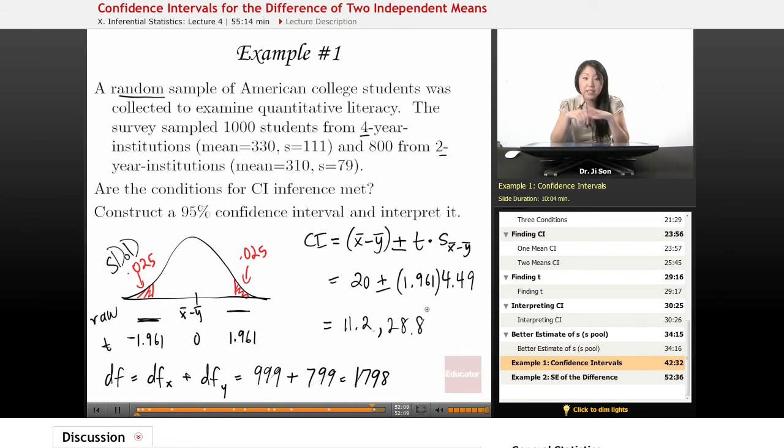And now we have to interpret it. This is the hardest part for a lot of people. We have to say something like this. The true difference between the population means 95% of the time is going to fall in between these two numbers. Or we have 95% confidence that the true difference between the two population means fall in between these two numbers.